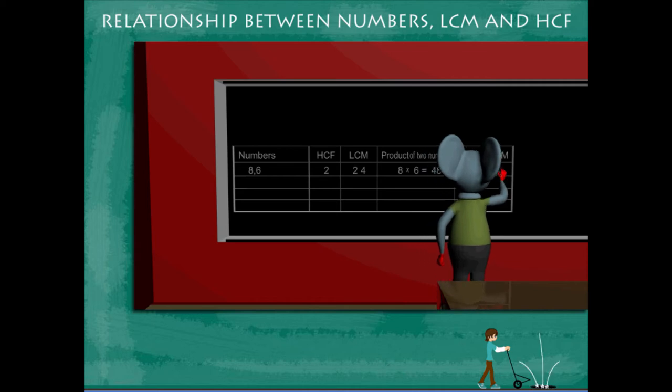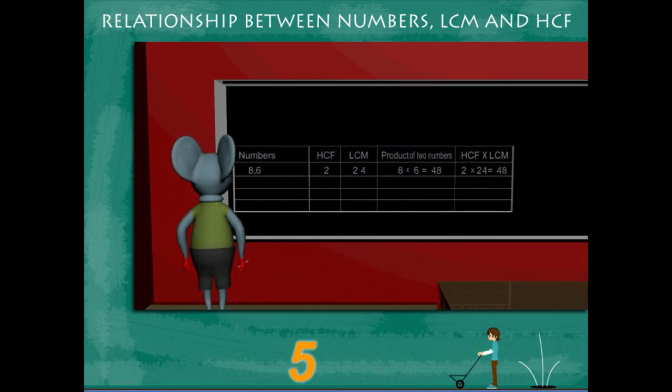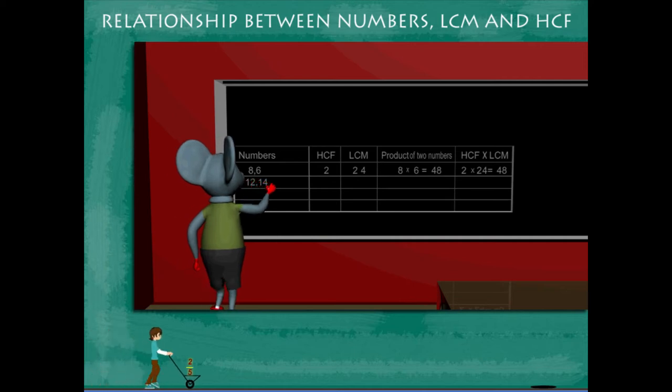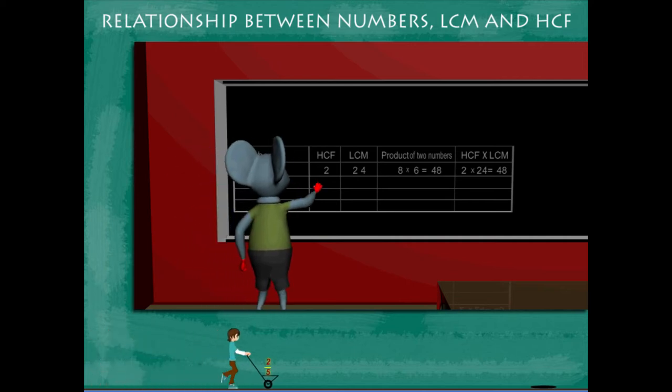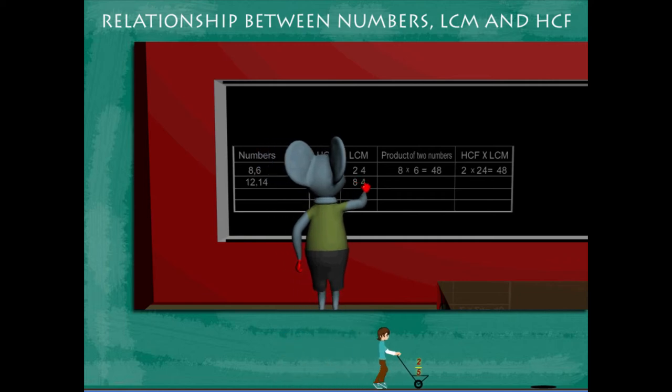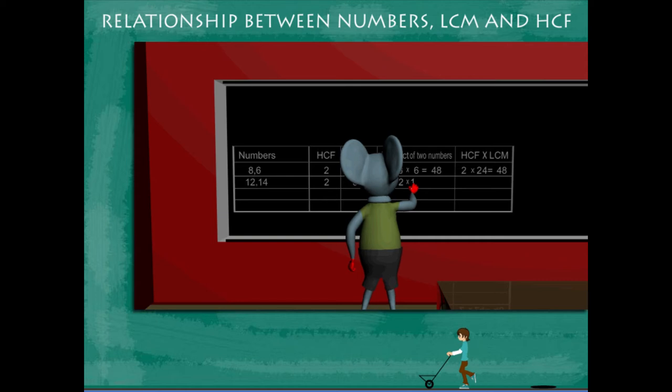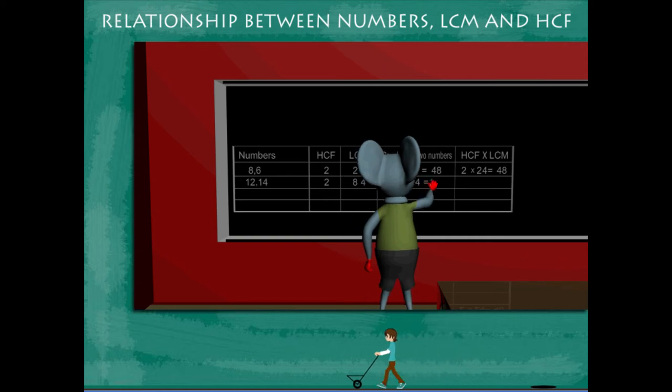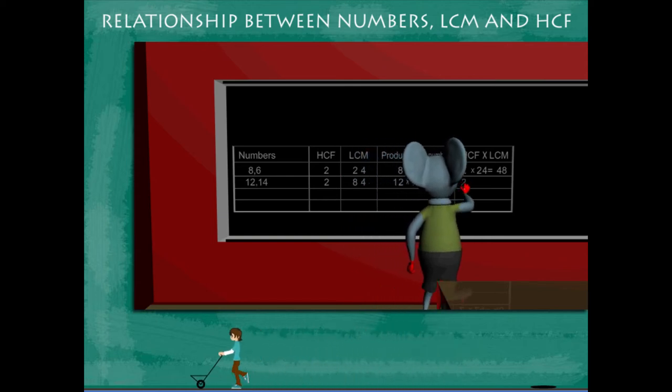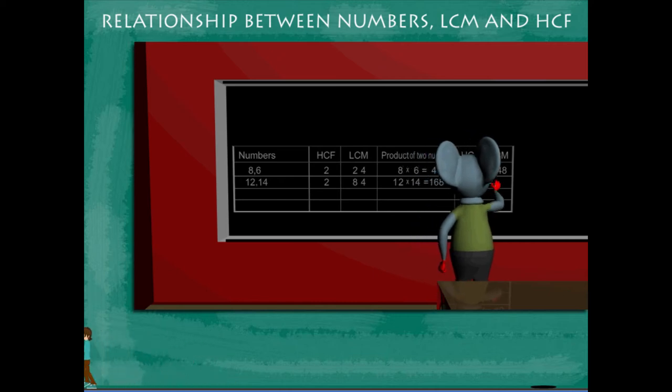He takes the next example 12 and 14. The HCF is 2, LCM is 84. The product is 12 into 14 equals 168. And the product of HCF and LCM is 2 into 84 equals 168.